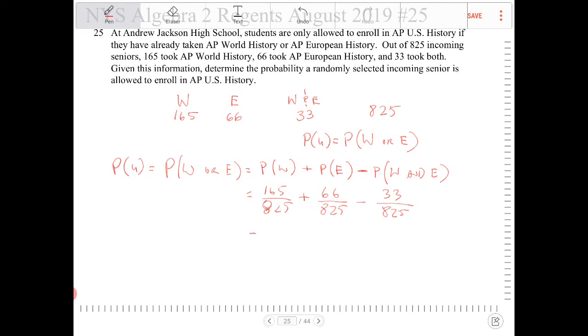And what would that be? That would be 160, no, 198 over 825 then. So probability of students taking U.S. History would be 198 over 825.